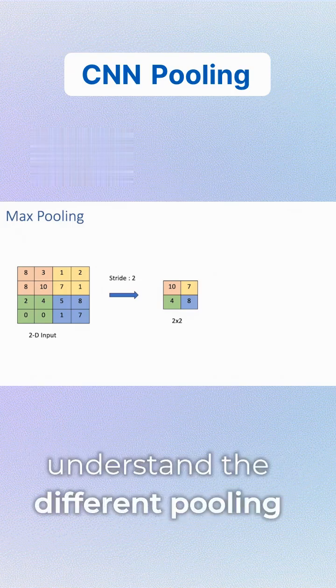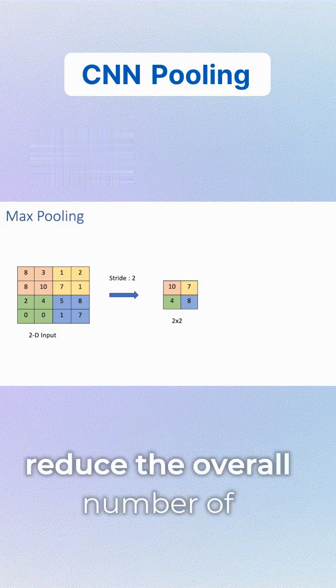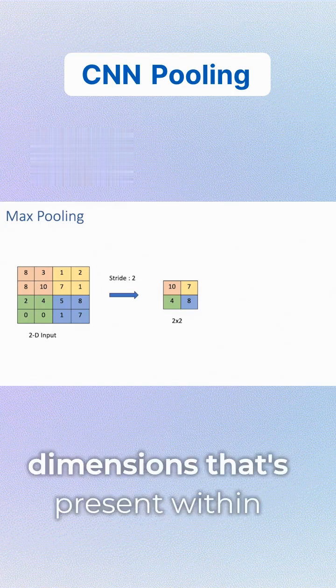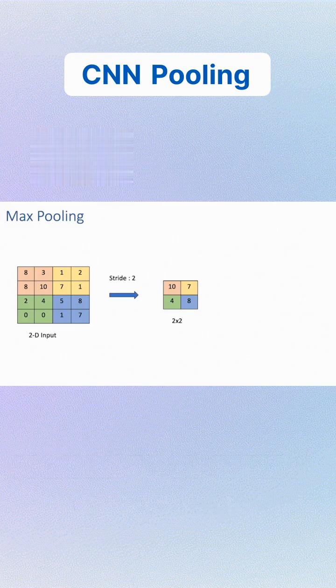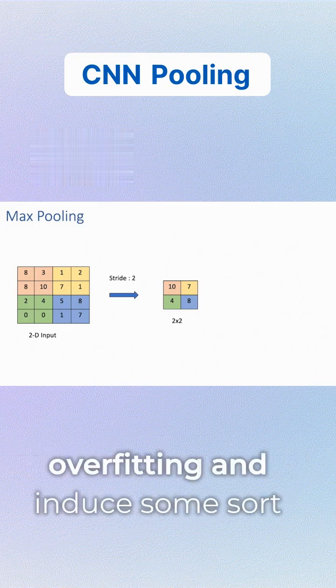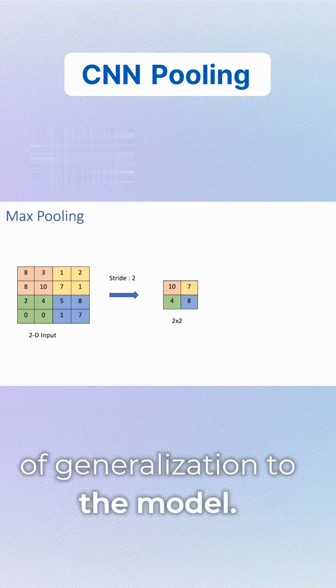In this short video, let's understand the different pooling techniques which reduce the overall number of dimensions present within your feature map, thereby reducing the overall complexity, reducing the problem of overfitting, and inducing some sort of generalization in the model.